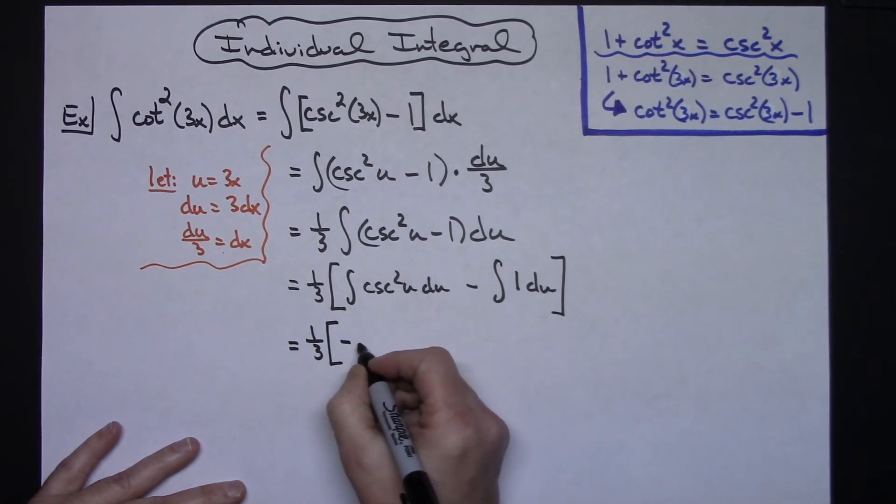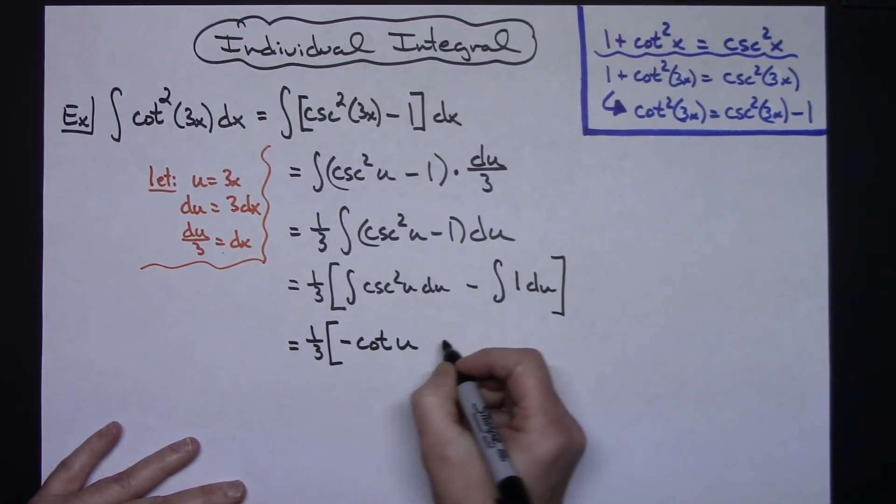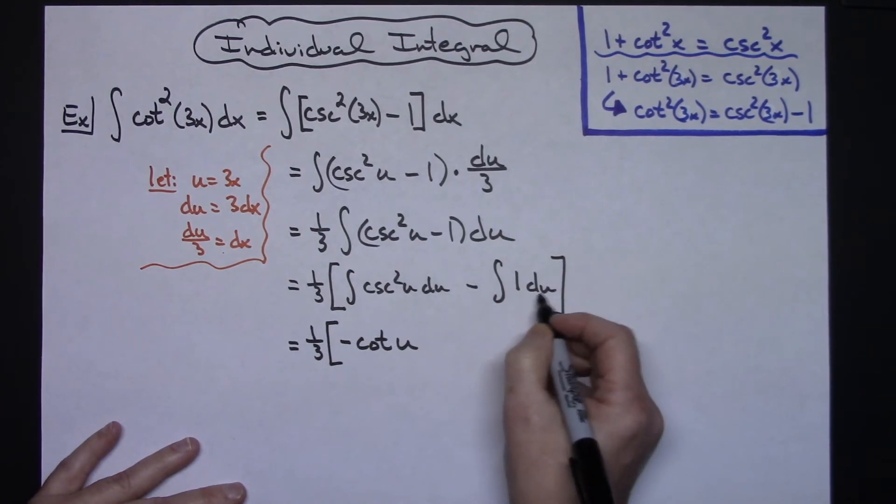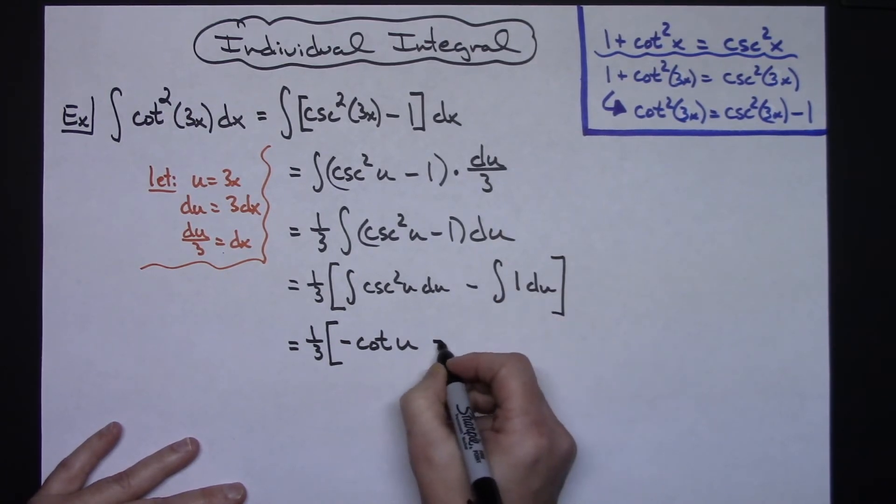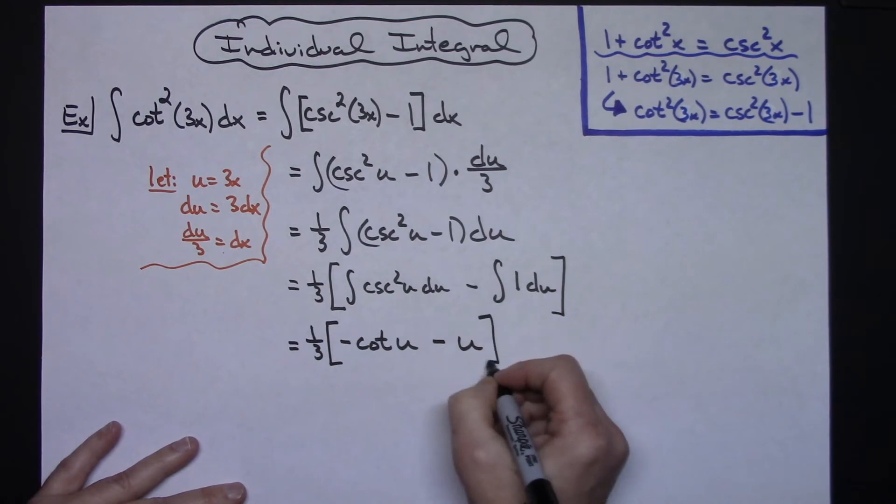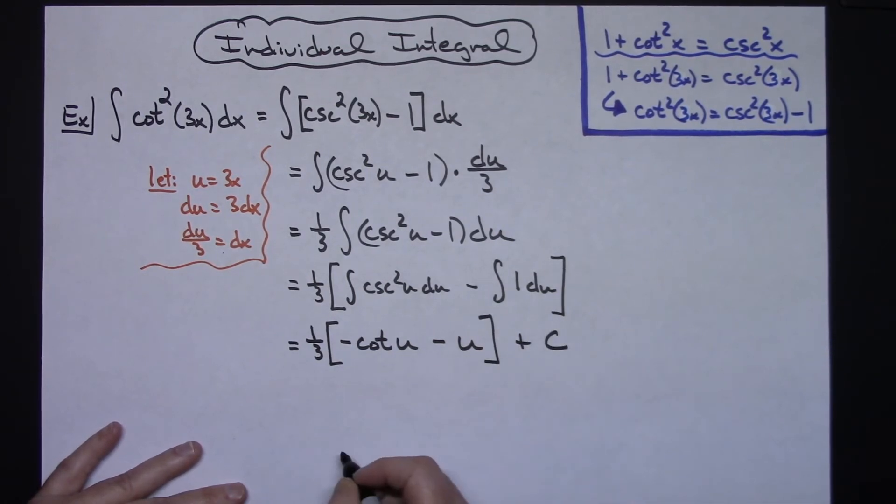Integrating that I get the negative cotangent u there. Integrating a 1 with a du is just going to give me a u, so I'll have a minus u and then going ahead and putting that plus C on.